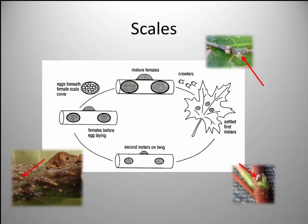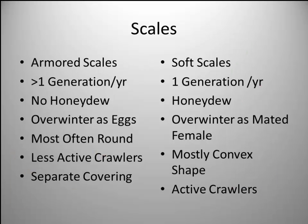Now let's talk about scales - they're in the Homoptera family. A scale is a small insect with a protective covering that has little crawlers emerging from underneath the female. There are armored or hard scales and soft scales. Armored scales usually have more than one generation per year, don't produce honeydew, eggs overwinter under the female, and they're rounded with less active crawlers. Soft scales generally have only one generation per year and produce honeydew - basically insect excrement full of sugars. Ants will collect that honeydew, and if a predator tries to attack the scales, the ants will defend them - it's like a cash cow.